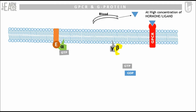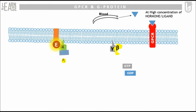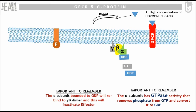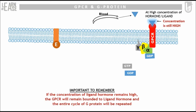The GTP-bounded alpha subunit will activate the effector component by binding to it, and as a result, the effector will produce a second messenger. The alpha subunit has GTPase activity by which it removes a phosphate from GTP, converting it to GDP. This causes the alpha subunit to go back and bind with the gamma-beta dimer, inactivating the effector. The trimeric G-protein will then rebind to the GPCR. This cycle will continue as long as the concentration of the ligand or hormone is high enough to activate GPCR.